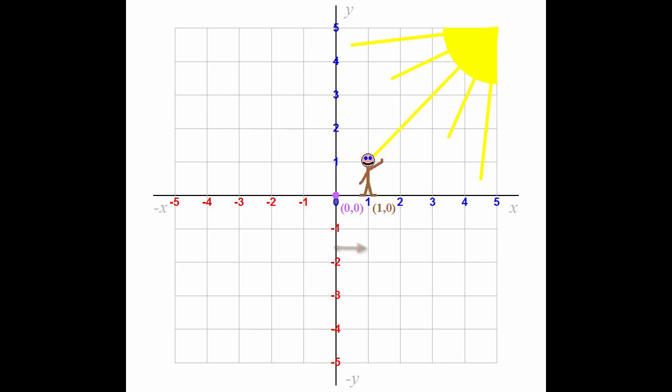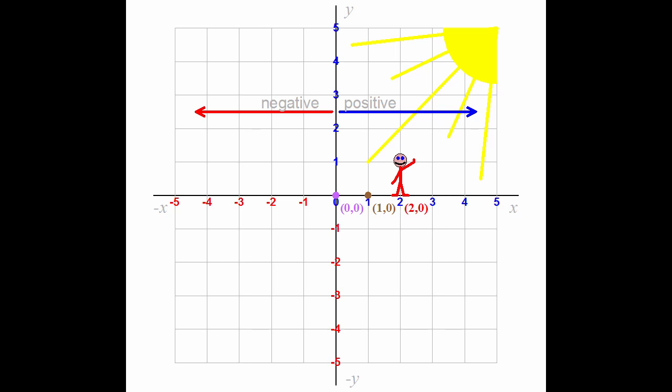When you take one step to the right, not up or down, just one step horizontally, your coordinate is now 1 comma 0. Numbers to the right of the origin are positive. One more step to the right, more positively, the coordinate is 2 comma 0. Numbers to the left of the origin are negative. If you walk three steps back from where you are, 2 minus 3, you are at the left of the origin, at coordinate minus 1 comma 0. So far, you're only moving horizontally along the X-axis.